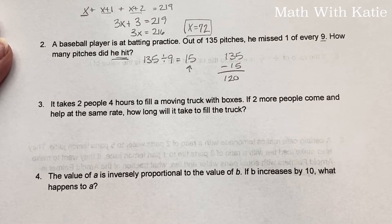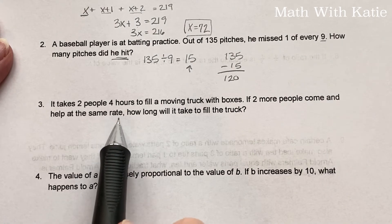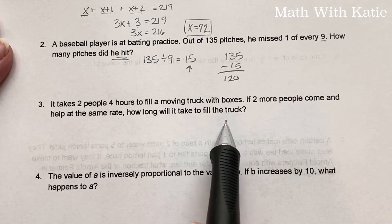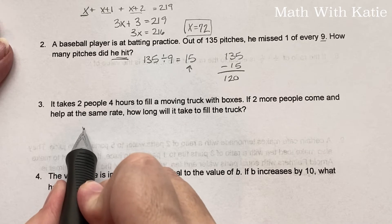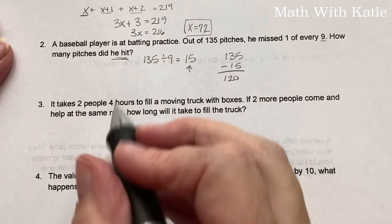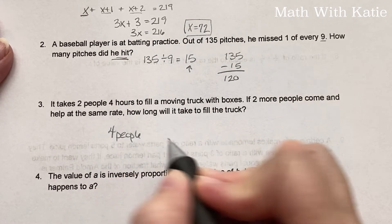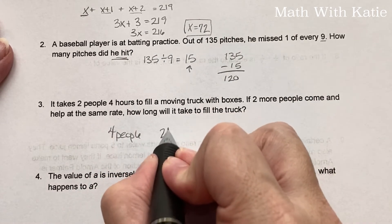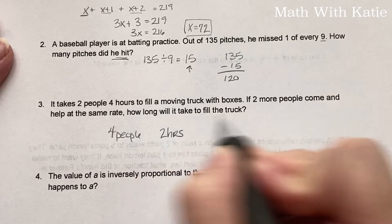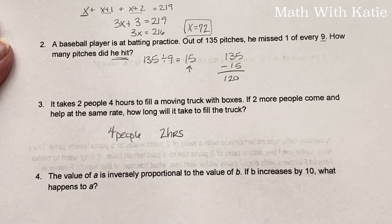It takes two people four hours to fill a moving truck with boxes. If two more people come and help at the same rate, how long will it take to fill the truck? Well, if you double the people, you're going to half the rate. So four people will take two hours, because we double the people, half the rate.